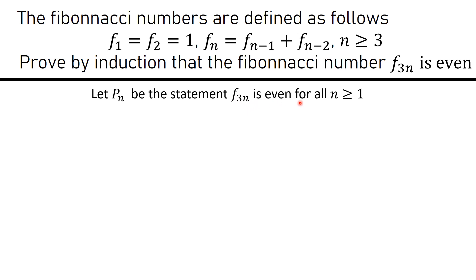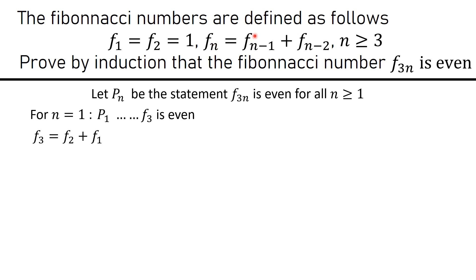We let the statement P(n) be: f(3n) is even for all n ≥ 1. We begin by verifying P(1) is true, meaning f(3) is even. Computing: f(3) = f(2) + f(1) = 1 + 1 = 2. Since 2 is even, the statement P(1) is true.